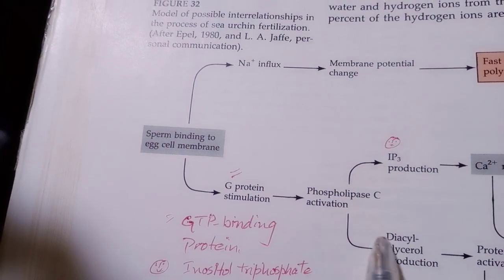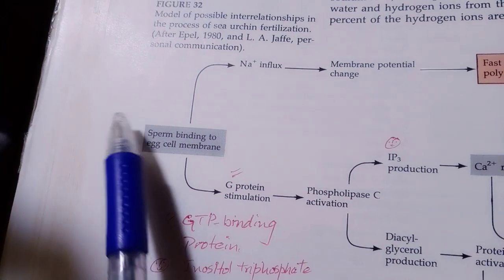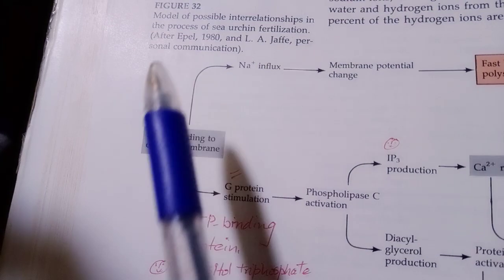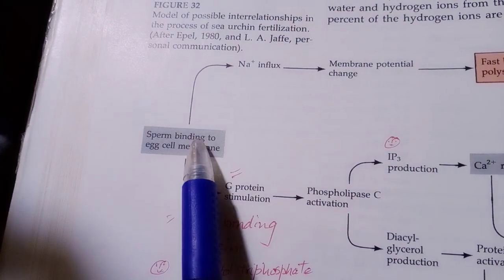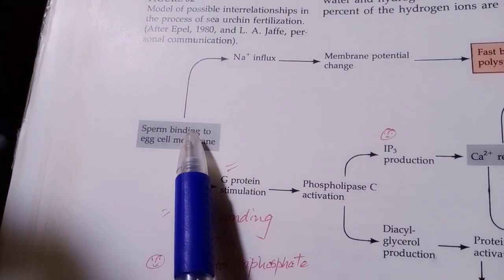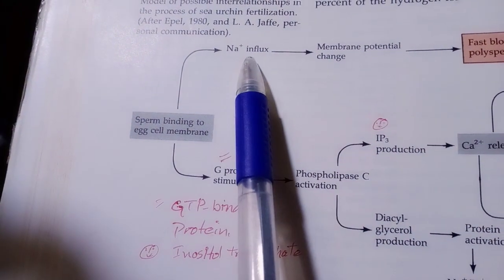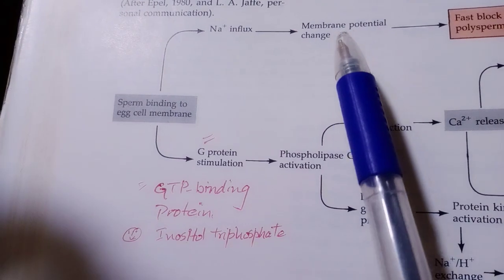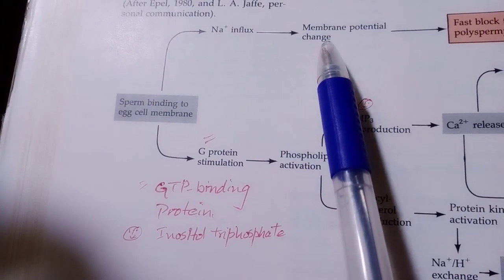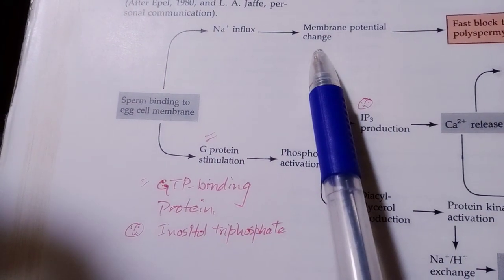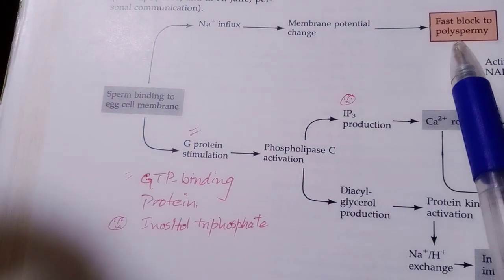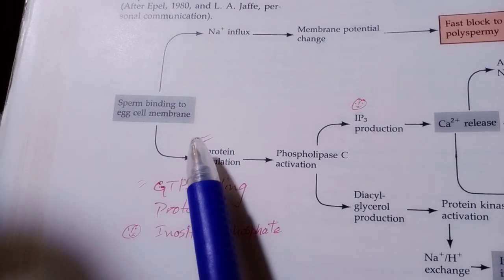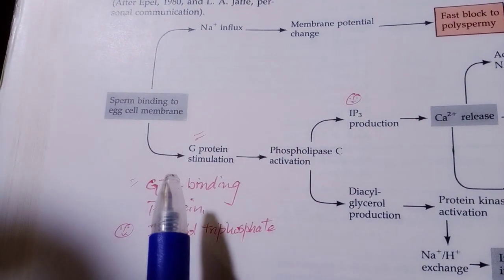Here is the fast block to polyspermy. As the sperm binds, as I stated earlier, the influx of sodium ions occurs, and then the membrane potential is changed. Fast block to polyspermy occurs due to the influx of sodium ions.